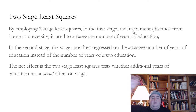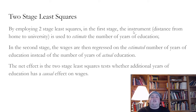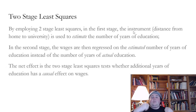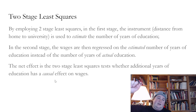For each observation — each person in our data — we're going to have an estimated number of years of education. In the second stage, wages are then regressed on the estimated number of years of education instead of the actual years of education. The net effect of doing this is the two-stage least squares test of whether additional years of education has a causal effect on wages. Using this instrument to estimate the treatment variable and then regressing wages on the estimated number of years of education, we can draw causal inferences and say this number of years of education actually does have a causal effect on wages.